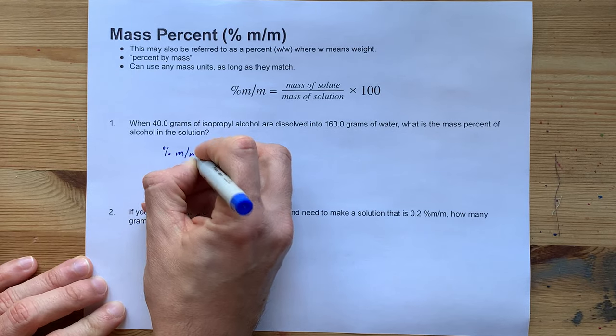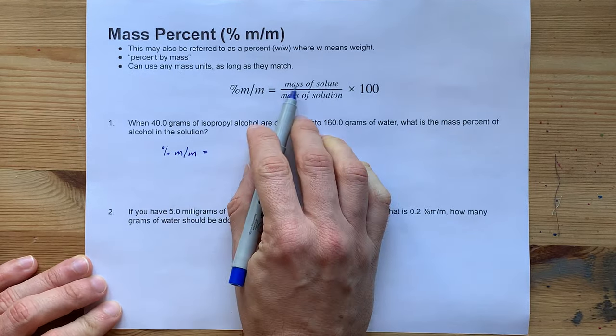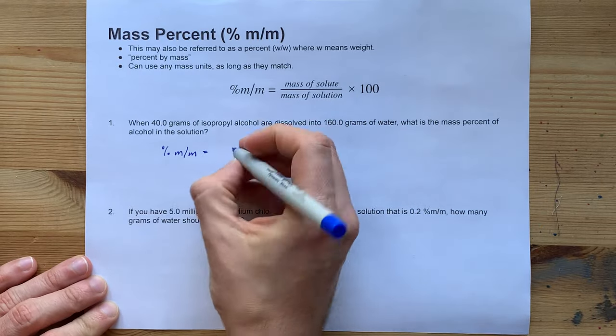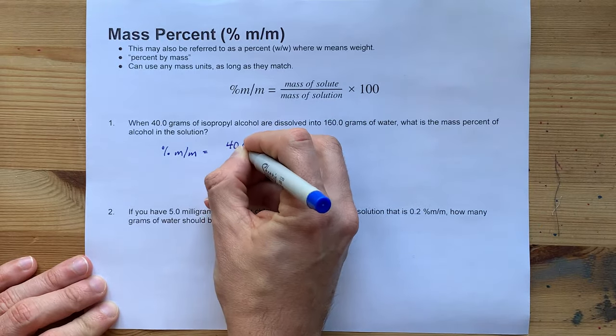The percent m over m, or mass percent, is the mass of the solute. That's the thing that's dissolved into the solution. Here it is 40.0 grams.